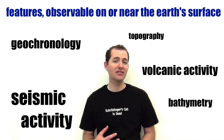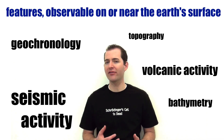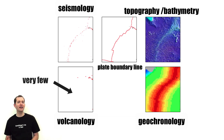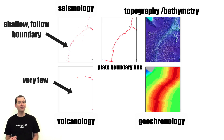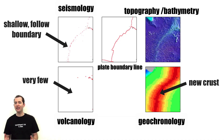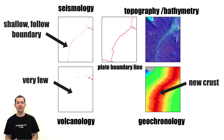Let's look at how each of these features are represented on a divergent boundary. Most divergent boundaries exist in the oceans, and they're characterized by very few volcanoes. They also have seismic activity that is shallow and follows the plate boundary line. One of the distinguishing features of a divergent boundary is that they have new crusts — this is why they are called a constructive plate boundary, because they're always creating new crust.